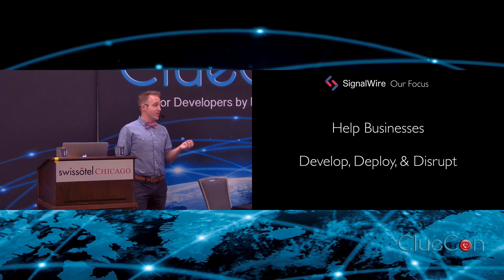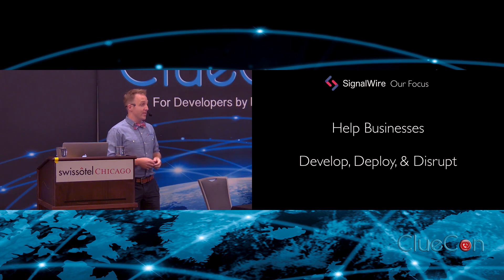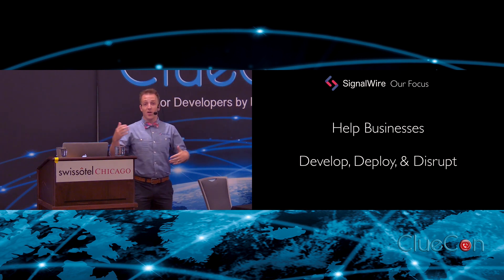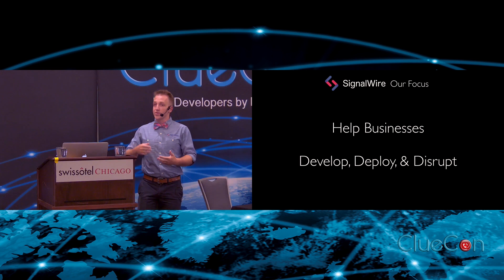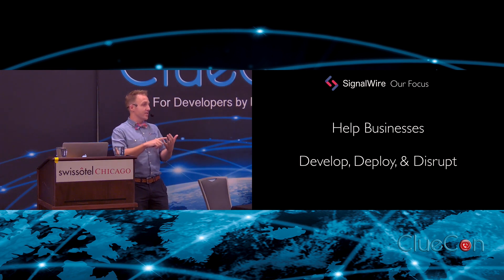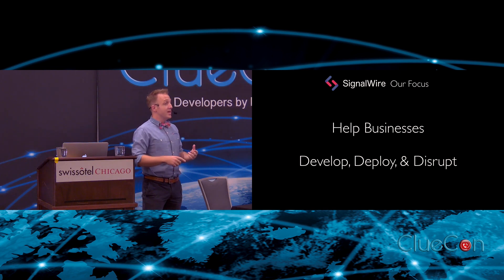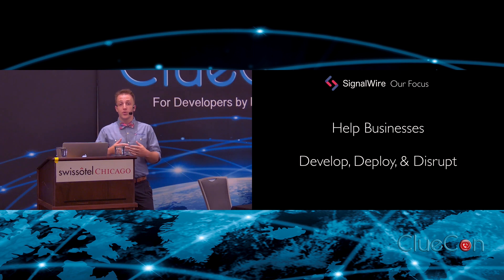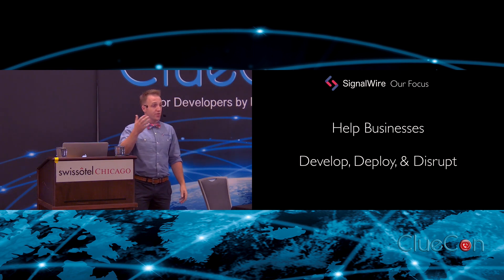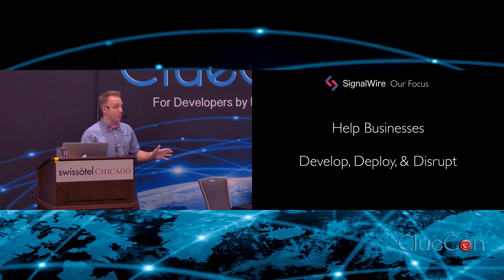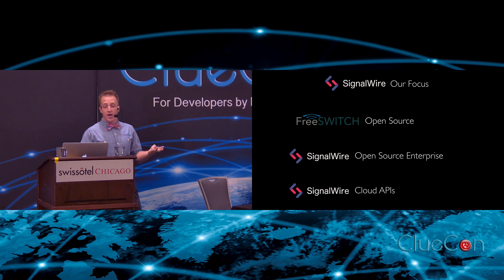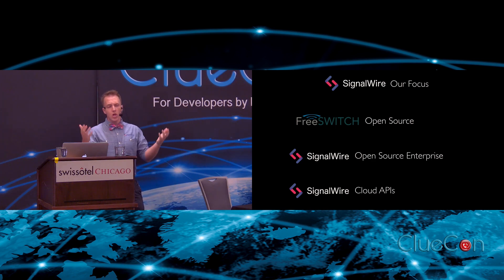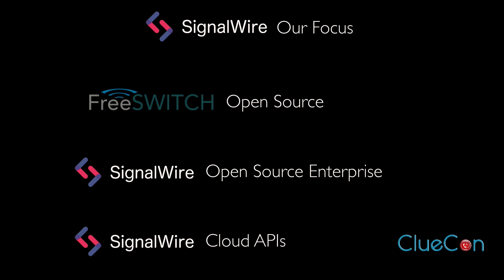Everyone in here is probably fairly familiar with FreeSwitch and the internals and how to make it work. You also know a lot of the pain points. But people you work with and clients might not know it that well. Downloading it and getting started immediately is a fairly complex process — you have to know the XML dial plan language, figure out all the different configuration options, STUN and TURN, and all this stuff starts popping up. Our focus is basically three parts: one is the FreeSwitch open source community; two is the FreeSwitch open source enterprise edition; and three is the SignalWire cloud APIs.